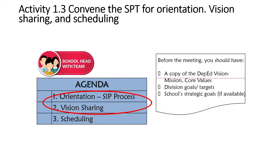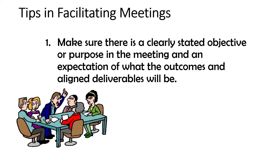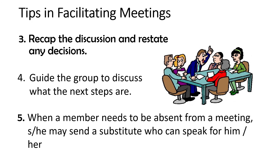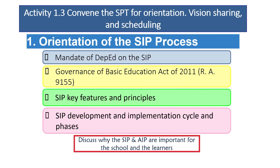When you put them all together, be creative and think of reflective activities that will engage your SPT — do not make it boring. Make sure there is a clearly stated objective or purpose of the meeting, and clear expectations of outcomes and assigned deliverables. Ask someone to document the meeting, recap the discussion, and state any decisions. Guide the group to discuss the next steps. When a member needs to be absent, they may send a substitute who can speak for them. The first step is orientation on the SIP process — talk about the mandate of DepEd and the SIP, the Governance of Basic Education Act 9155, SIP key features and principles, and the SIP development and implementation cycle and phases — but not too long, just enough for them to understand our mission.